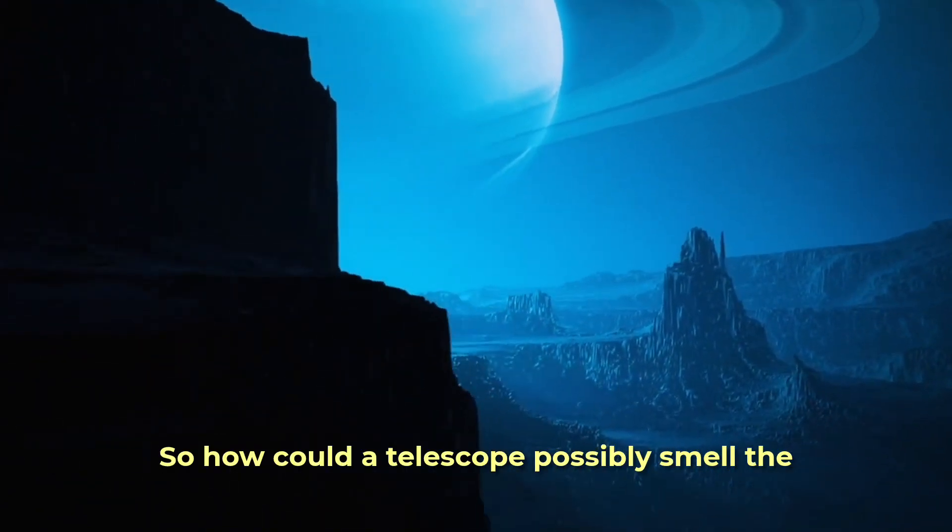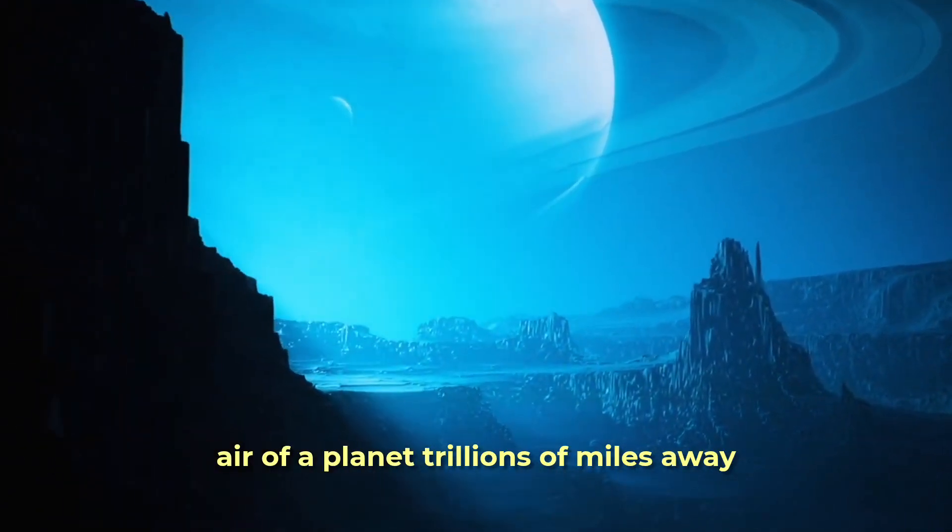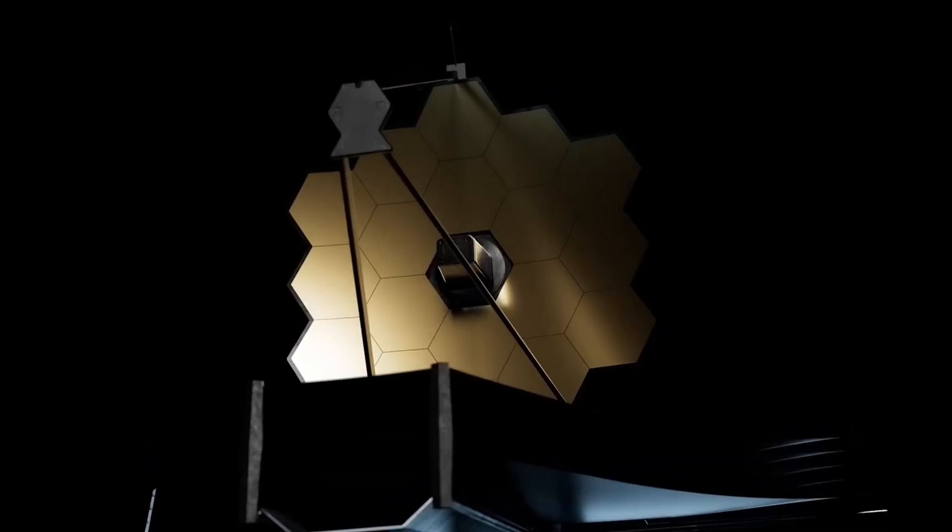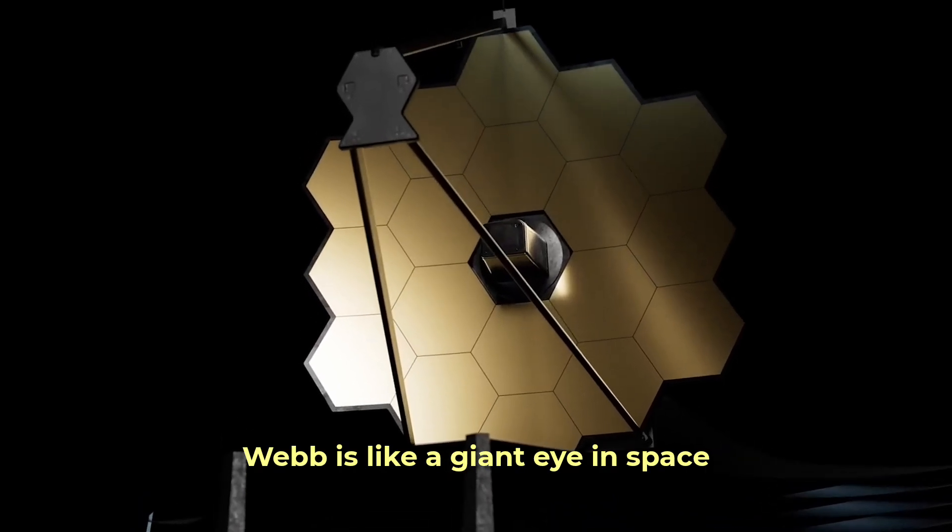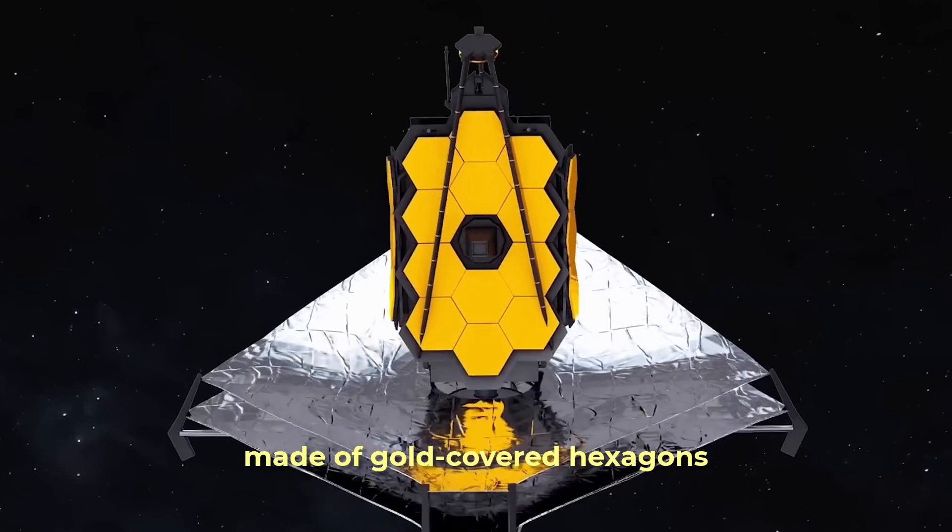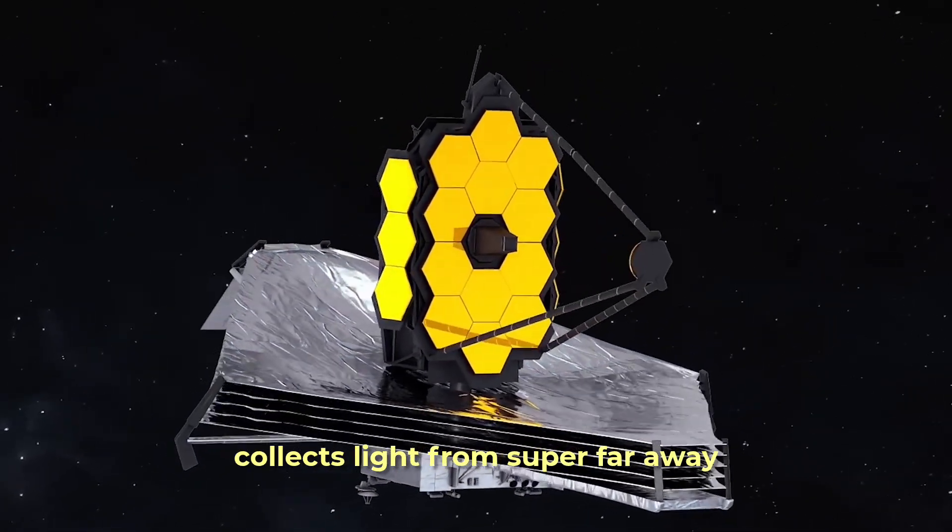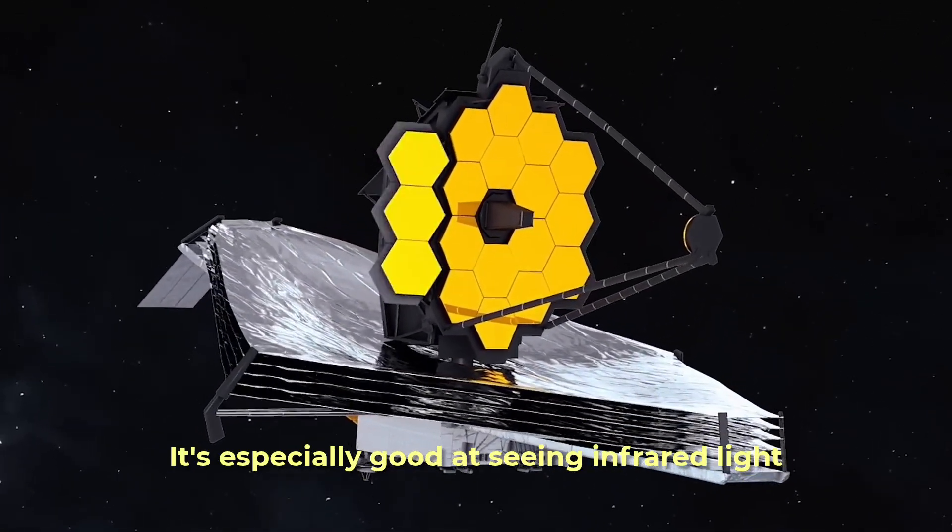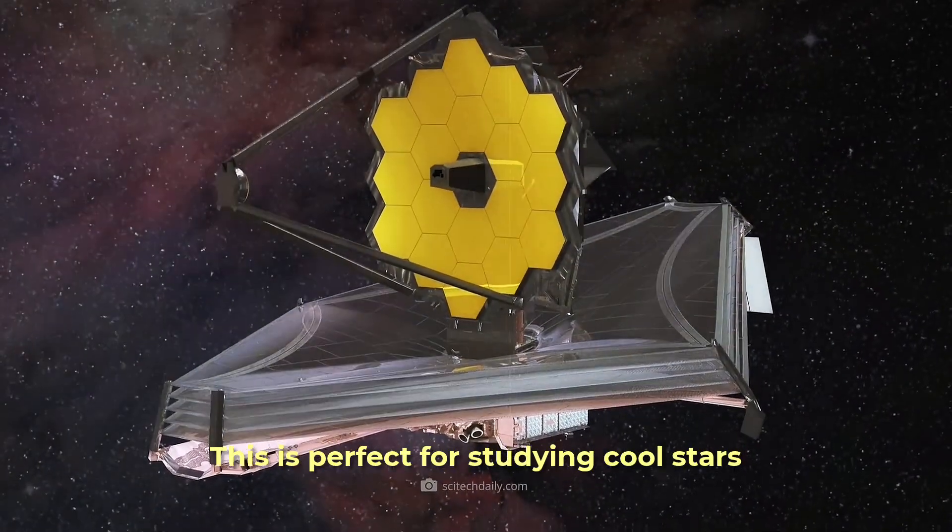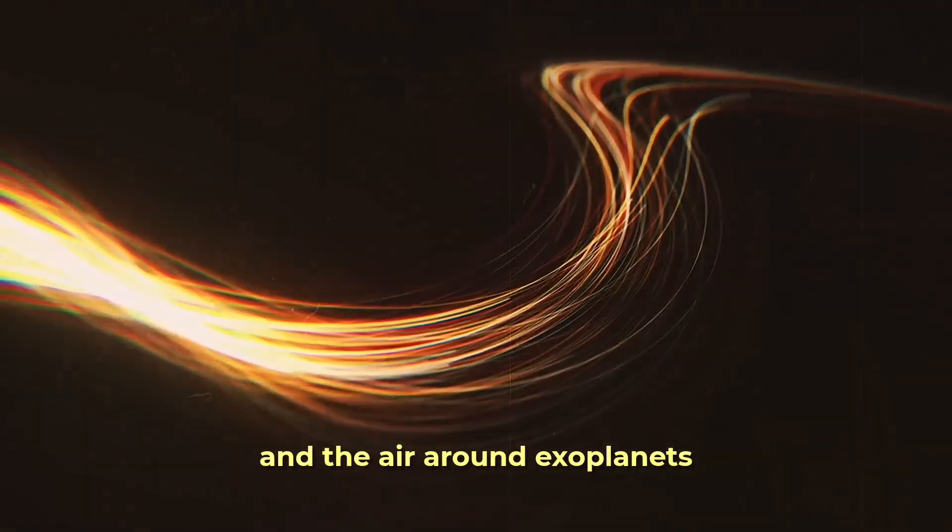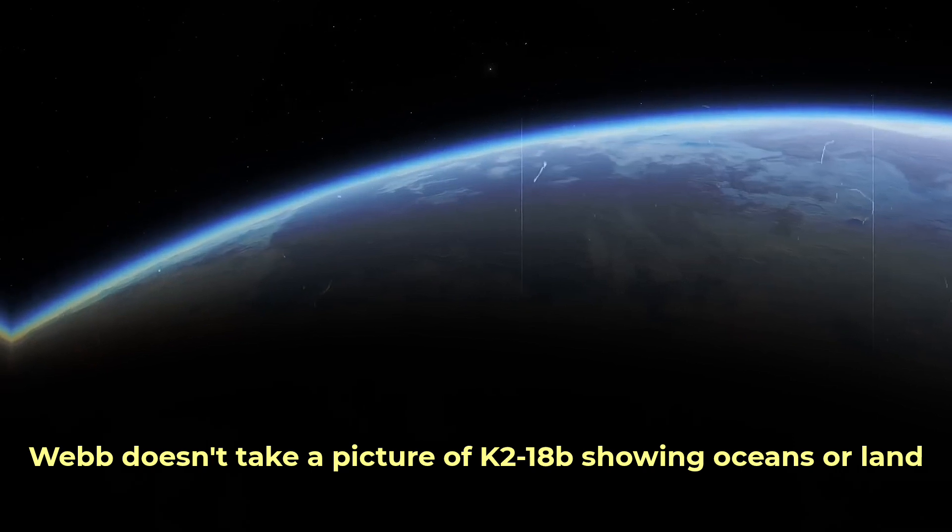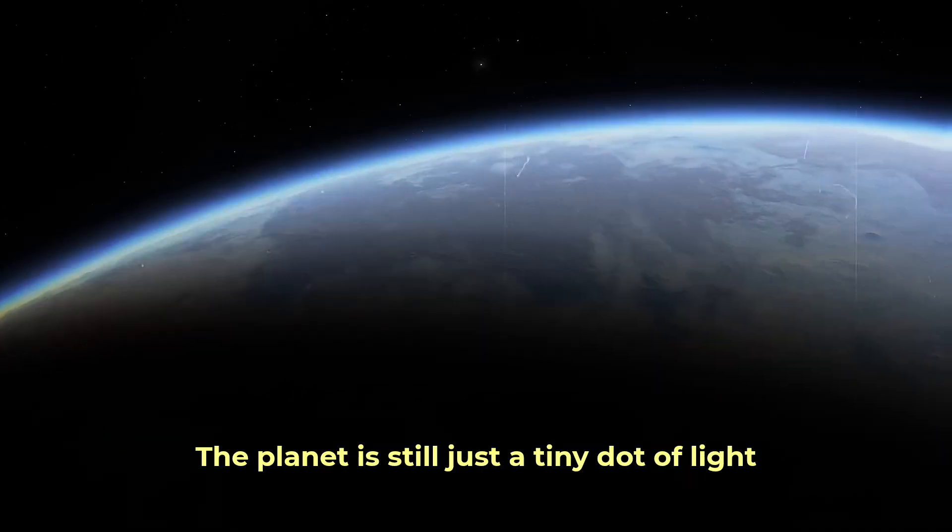So how could a telescope possibly smell the air of a planet trillions of miles away? Meet the James Webb Space Telescope, or JWST. Launched in 2021, Webb is like a giant eye in space, way farther from Earth than the Moon. Its huge mirror, made of gold-covered hexagons, collects light from super far away. It's especially good at seeing infrared light, which is like heat radiation that our eyes can't see. This is perfect for studying cool stars and the air around exoplanets. Webb doesn't take a picture of K2-18b showing oceans or land. The planet is still just a tiny dot of light.